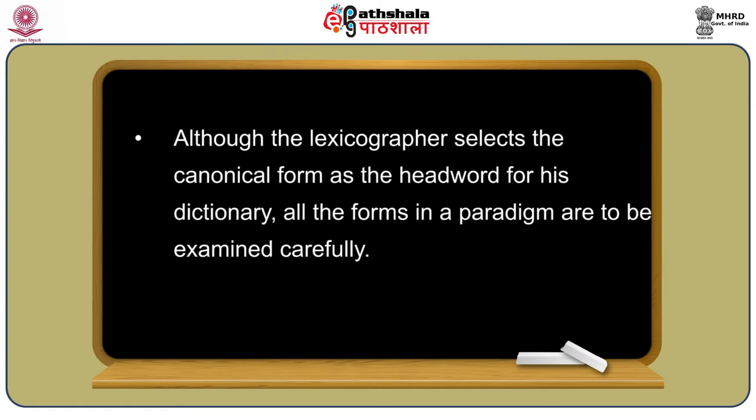Although the lexicographer selects the canonical form as the headword, all the forms in a paradigm are to be examined very carefully. If there is any form in the paradigm which is irregular and cannot be covered by the general inflectional rules of the language, it is to be given special treatment. For example, English 'goose' with plural 'geese', and 'sell/sold', 'write/written' — all these forms are irregular. Irregular forms should be included in a way so as to bring forth their relation to the canonical form, and irregularity is explained as far as possible.